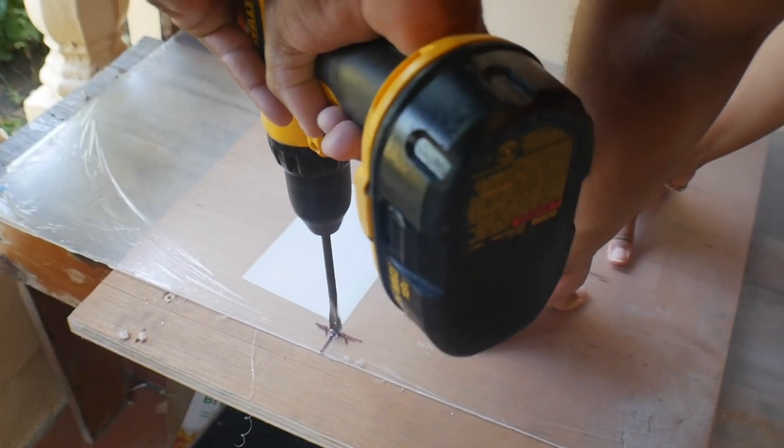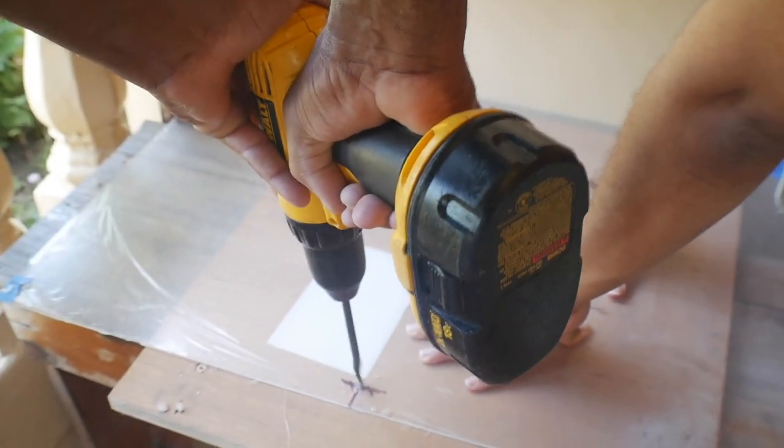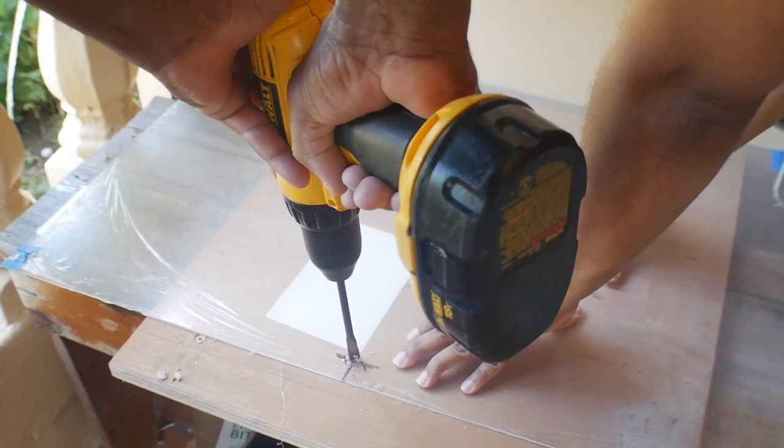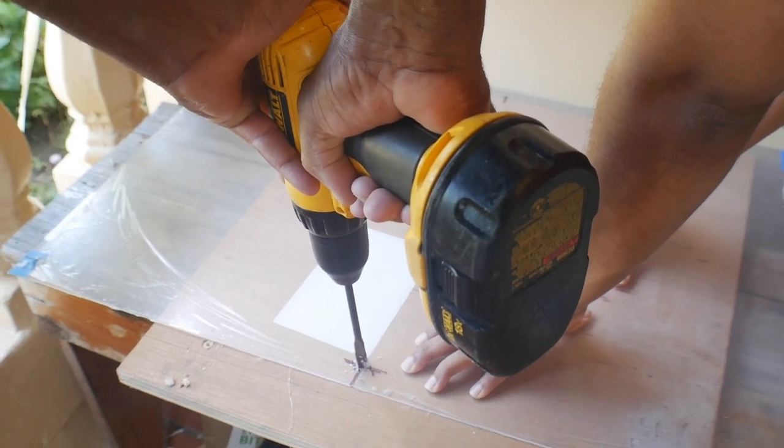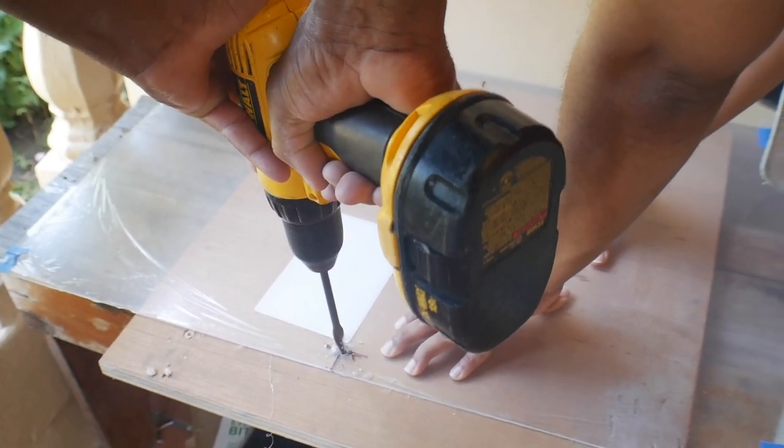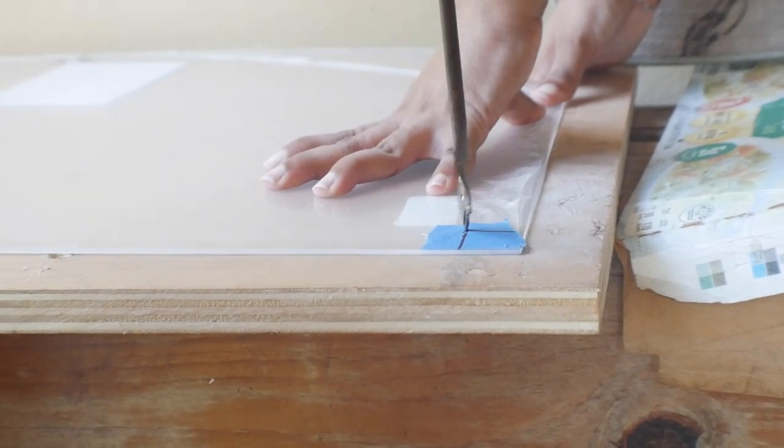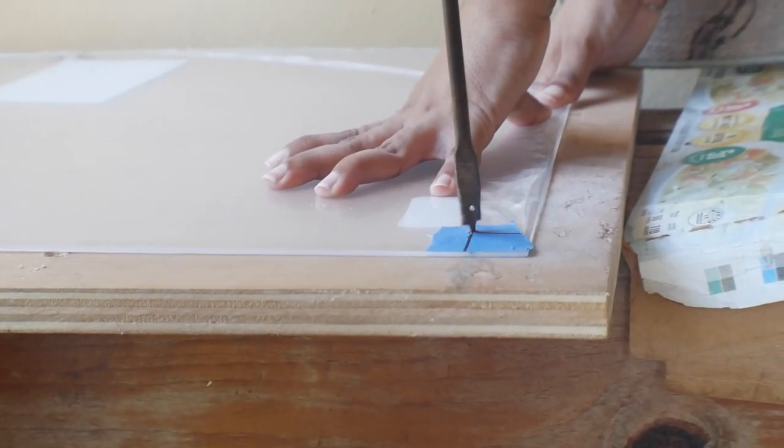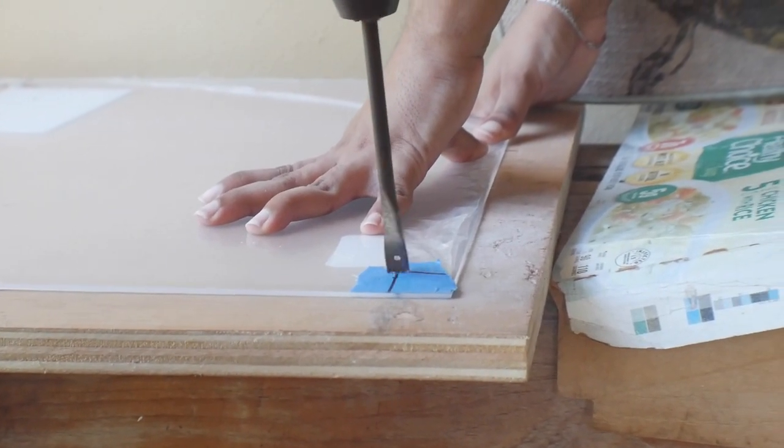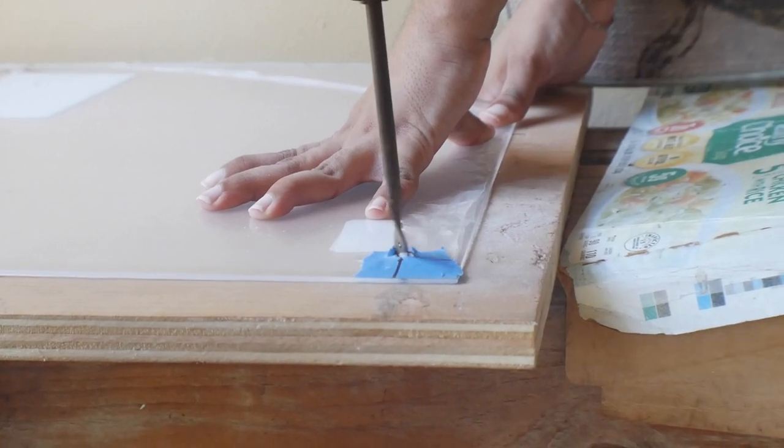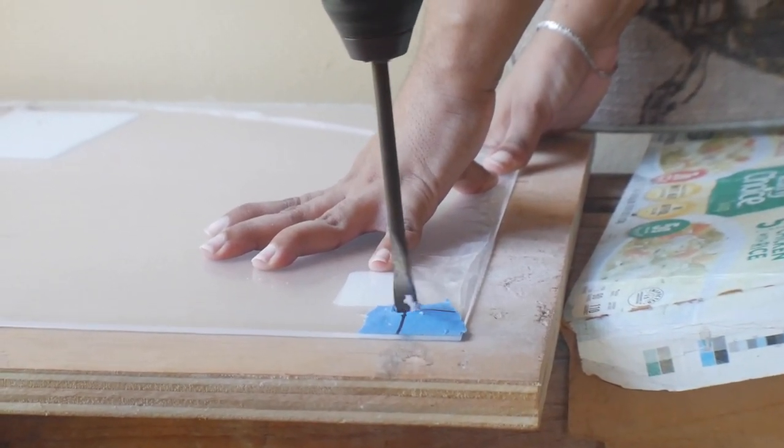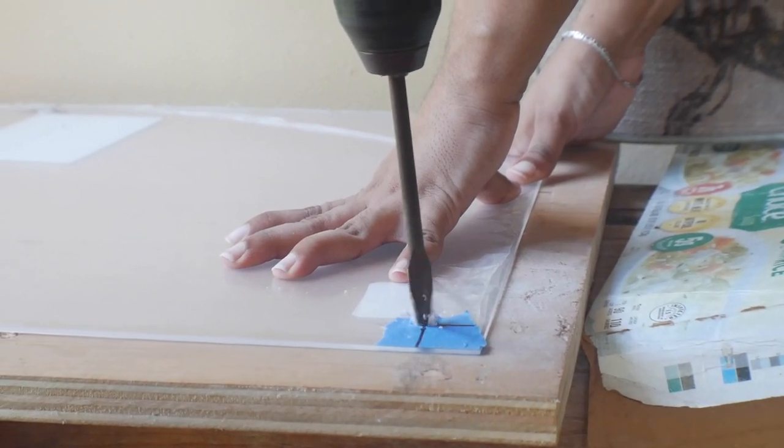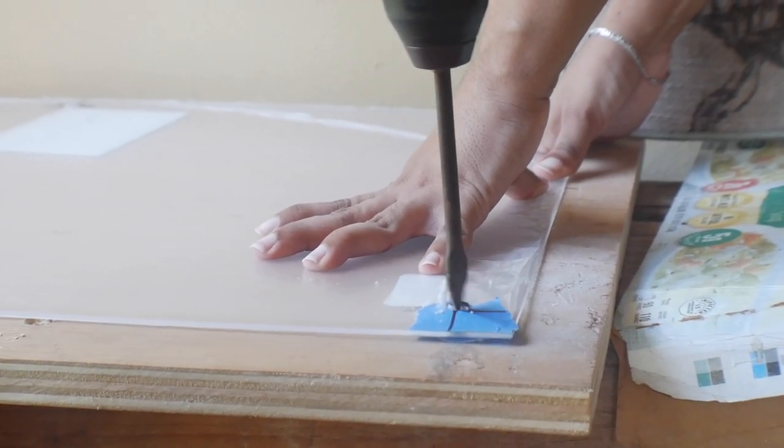I measured an inch in from each corner to get that point where we are drilling. They should all be even and equal. You'll recognize as well that we are using a piece of scrap wood beneath the plexiglass as the bit does drill through to that board, so you'd want to protect the surface you're working on.